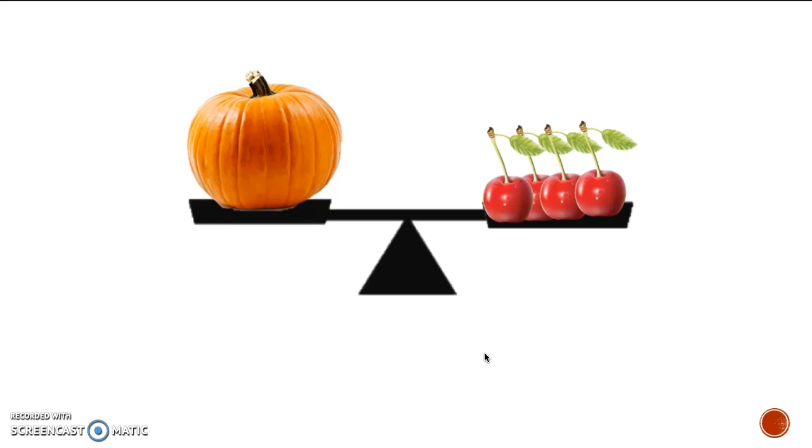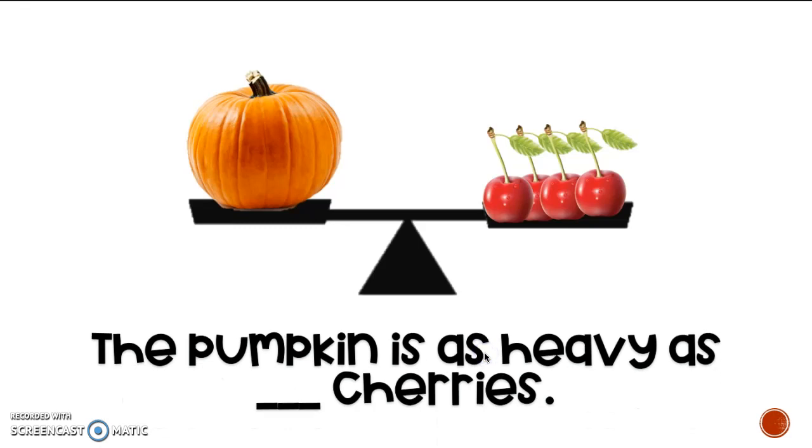All right, now I want to describe how many cherries there are and how many pumpkins there are. So I could say the pumpkin is as heavy as four cherries. That way, everybody knows that I am measuring the pumpkin by using a set of another object, which is the cherries. So for every one pumpkin, I need four cherries to make that balance scale even.